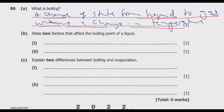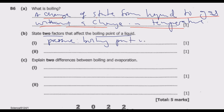Now let us look at part B: state two factors that affect the boiling point of a liquid. Two factors are required. Number one is pressure. The boiling point increases as pressure increases, and decreases as pressure reduces. So boiling point increases with pressure.